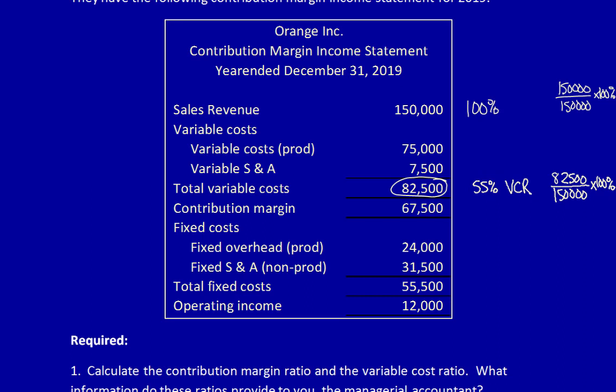Now let's try the Contribution Margin Ratio. 67,500 divided by the Sales Revenue multiplied times 100% is equal to 45%, Contribution Margin Ratio. I'm going to use that in the future as a short form. Notice the relationship between the three percentages.